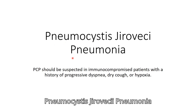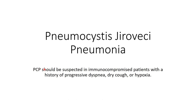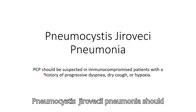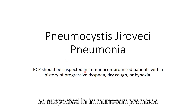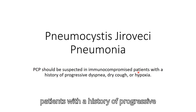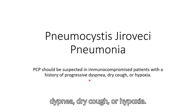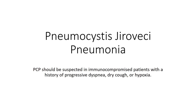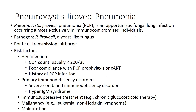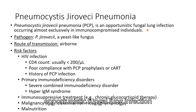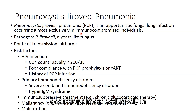Pneumocystis jirovecii pneumonia. Pneumocystis jirovecii pneumonia should be suspected in immunocompromised patients with a history of progressive dyspnea, dry cough, or hypoxia. It is an opportunistic fungal lung infection occurring almost exclusively in immunocompromised individuals.